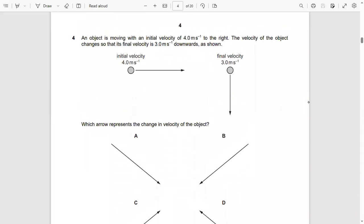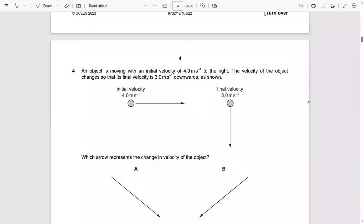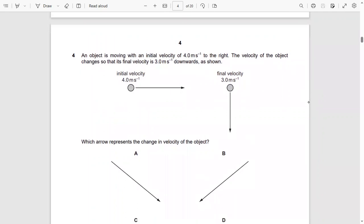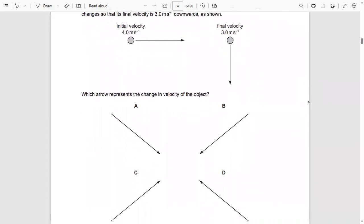This question is from vectors, summer 22 paper one, question number four. An object is moving with an initial velocity of 4 meters per second to the right. The velocity of the object changes so that its final velocity is 3 meters per second downwards as shown. Which arrow represents the change in velocity of the object?